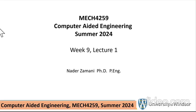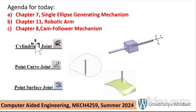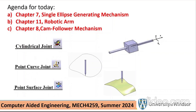Hi people, this is the first lecture of week 9 and my plan is to do three problems here, from chapters 7, 11, and 8. These are relatively simple problems and I'm not going to put any physics into the equation — therefore there are no formulas, no plots to be generated. Those you already know from front to back. In doing so, I will be introducing the point-curve joint, point-surface joint, and cylindrical joint.